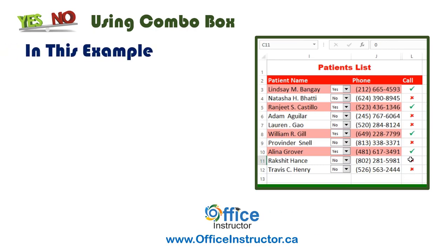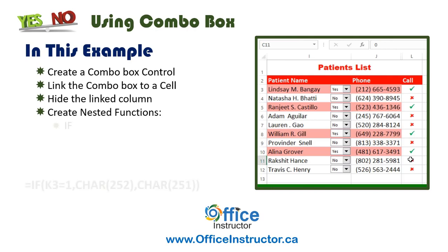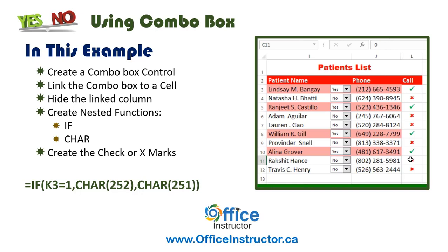In this project, we'll learn how to add the developer tab to the ribbon. Then we'll be creating a combo box for each record that shows a yes or no. We'll link the combo box to a cell, then create a nested function using IF and character functions with ASCII codes. We'll change the result to a check mark or an X mark, and finally apply three conditional formatting rules. Let's build our project from the ground up in Excel.